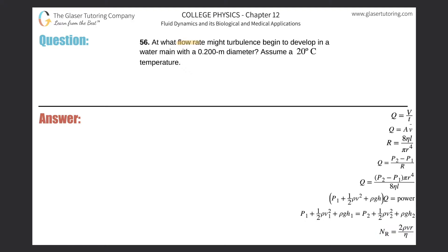Number 56: at what flow rate might turbulence begin to develop in a water main with a 0.2 meter diameter? Assume a 20 degrees Celsius temperature.